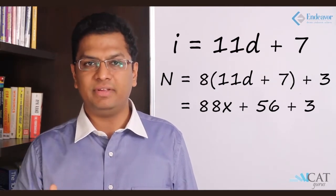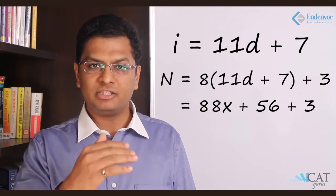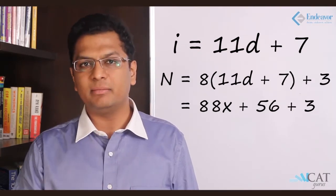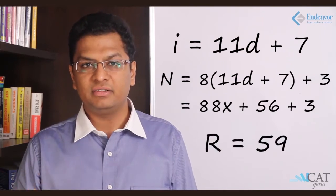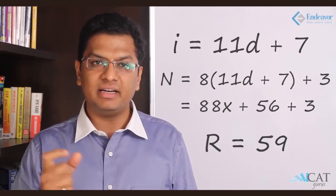So if we divide this by 88, we find that the first part which is 88d gets divided completely. The second part which is 59 does not get divided. So that is where the remainder is 59, is the remainder.